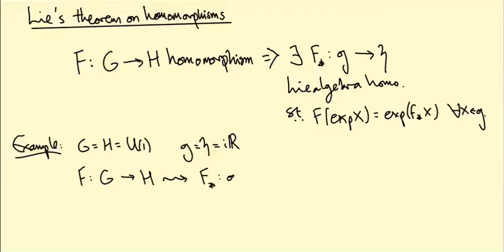Being a linear map, there's only really one possible thing you could do which is rescale, right? Because little g is the imaginary numbers, that's a one-dimensional vector space.